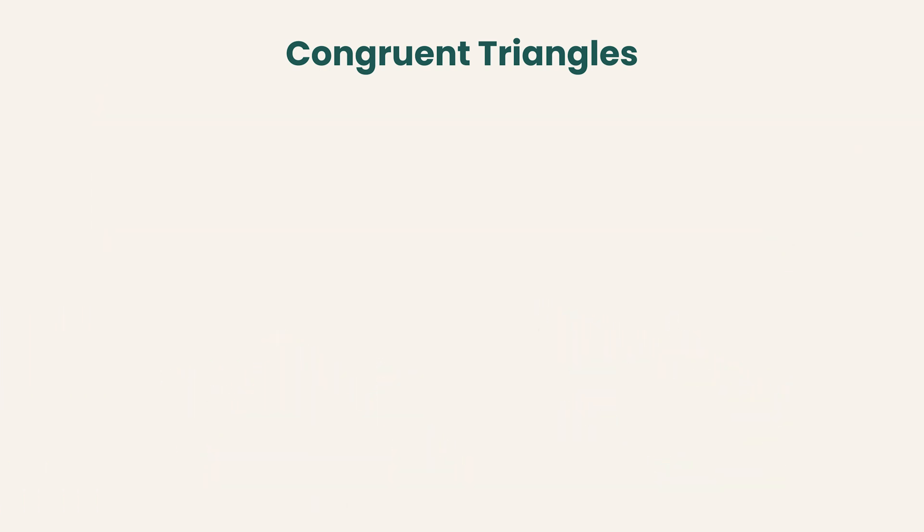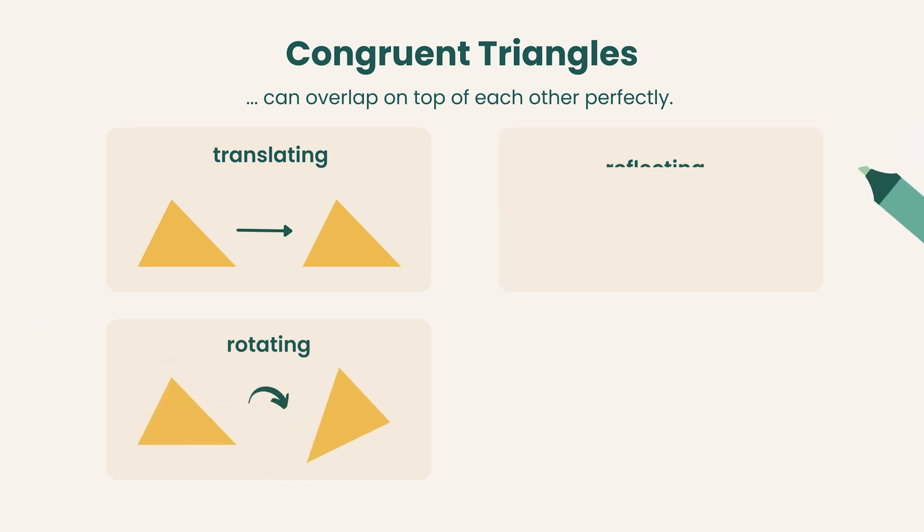Congruent triangles might be in different positions and orientations, but they can overlap perfectly with each other by translating, rotating, reflecting, or through any other movement.